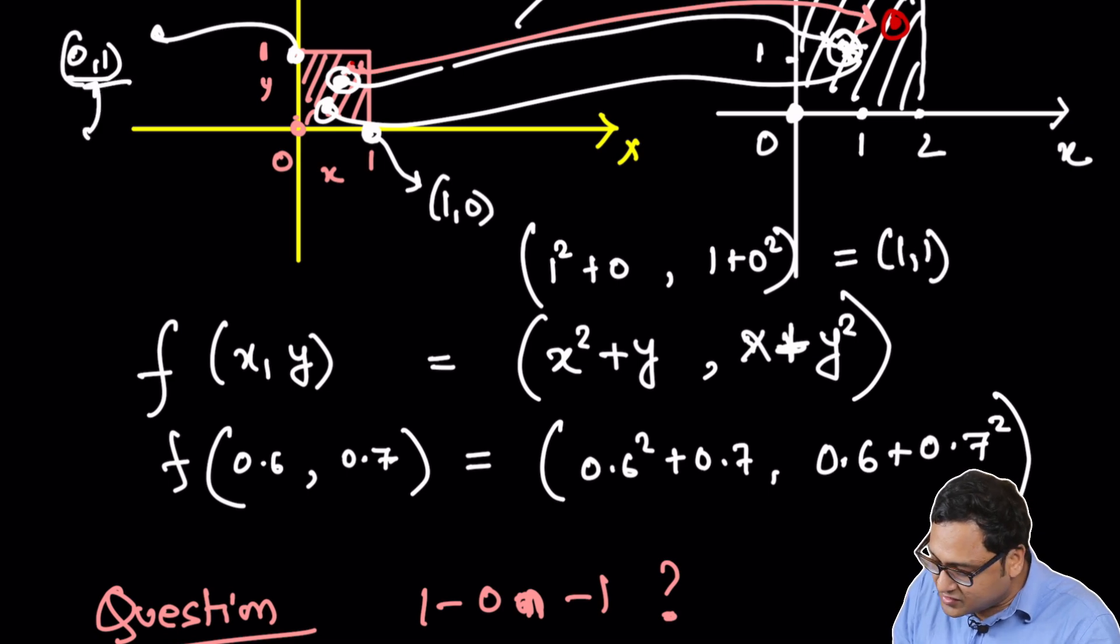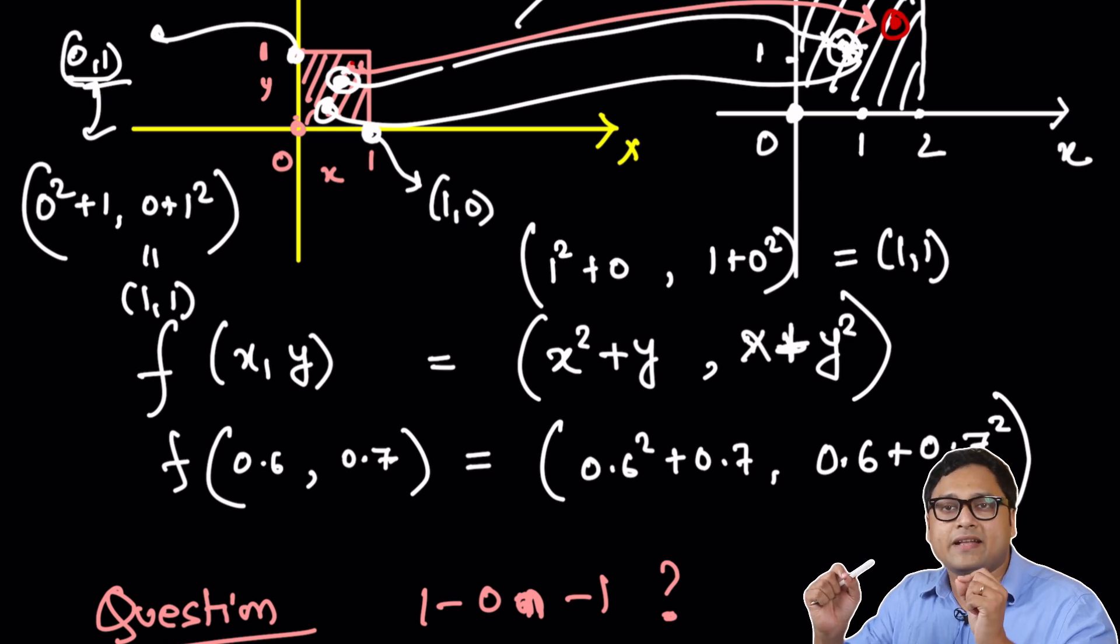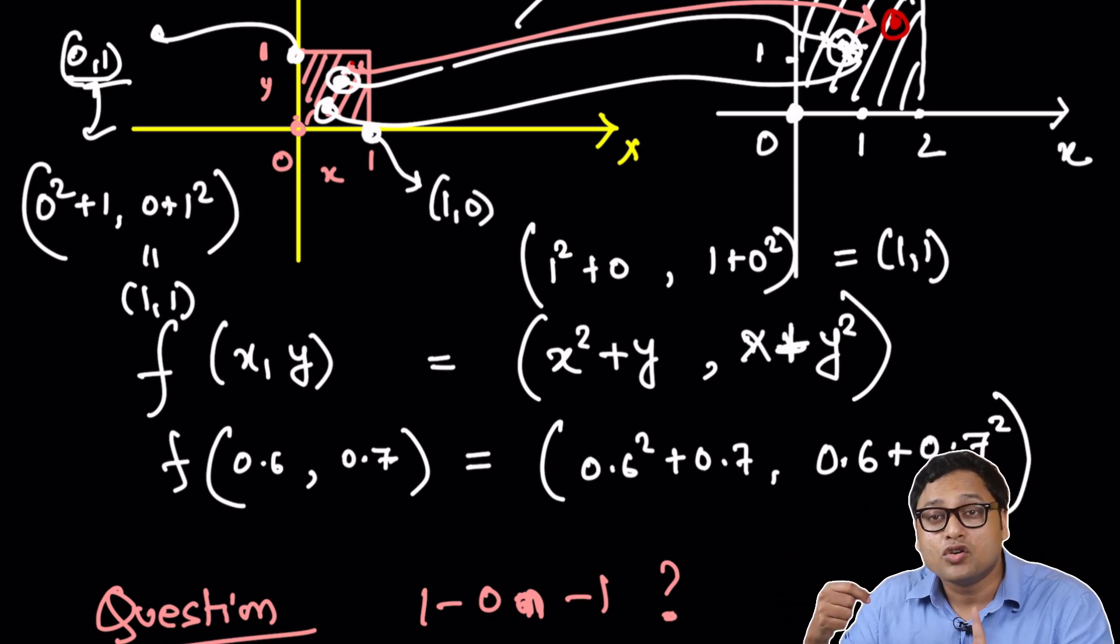And 0 comma 1 also maps to 0 squared plus 1 comma 0 plus 1 squared, which is again 1 comma 1. So 1 comma 0 and 0 comma 1, both of these points map to 1 comma 1. So the function is not one-to-one.